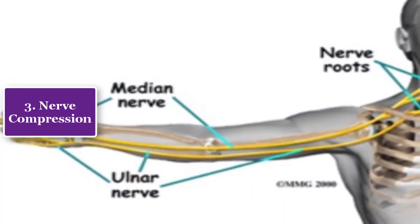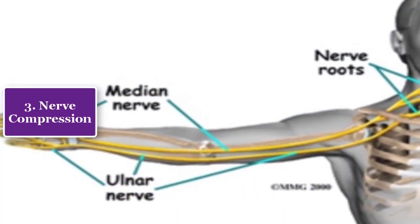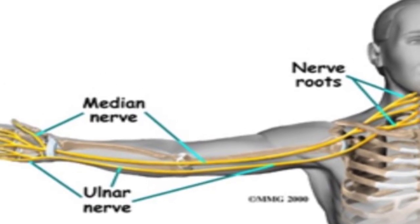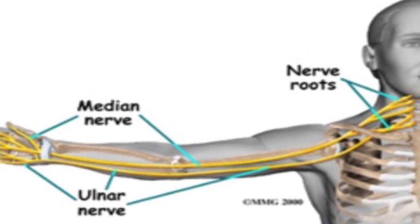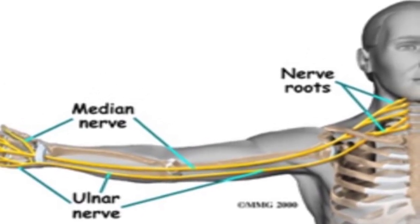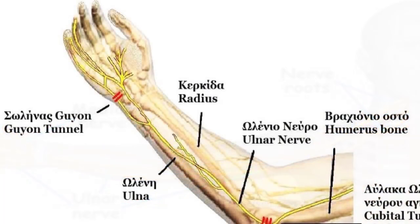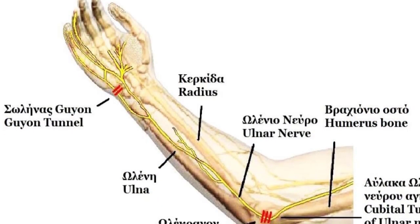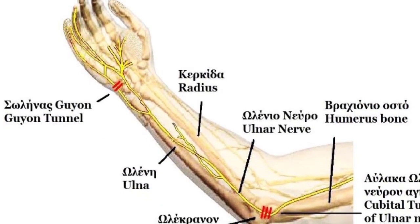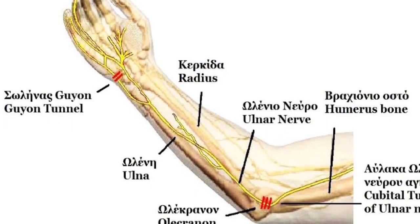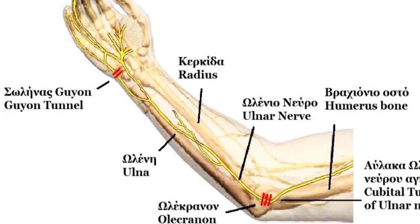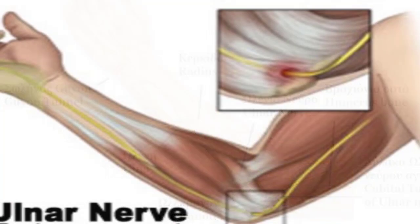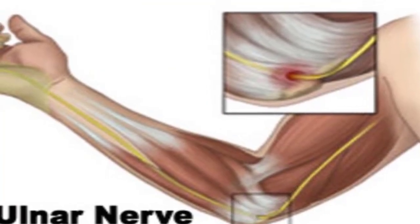3. Nerve compression. Nerves exit your spine between each of your vertebrae, which are the bones that make up your spine. Cervical spinal nerves exit the vertebrae in your neck, supplying sensation to the skin and power to the muscles in your arms and hands. The spinal nerve C5 supplies sensation to your upper arm.